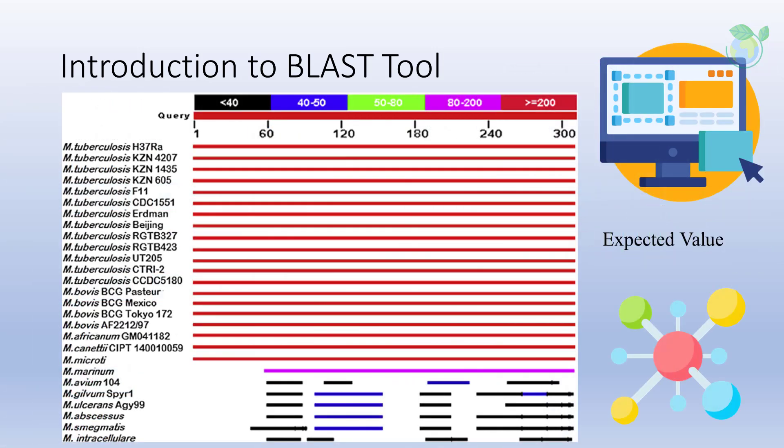Typically, a higher expect value threshold is less stringent, and the BLAST default of 10 is designed to ensure that no biologically significant alignment is missed. However, expect values in the range of 0.001 to 0.0000001 are commonly used to restrict the alignments shown to those of high quality.